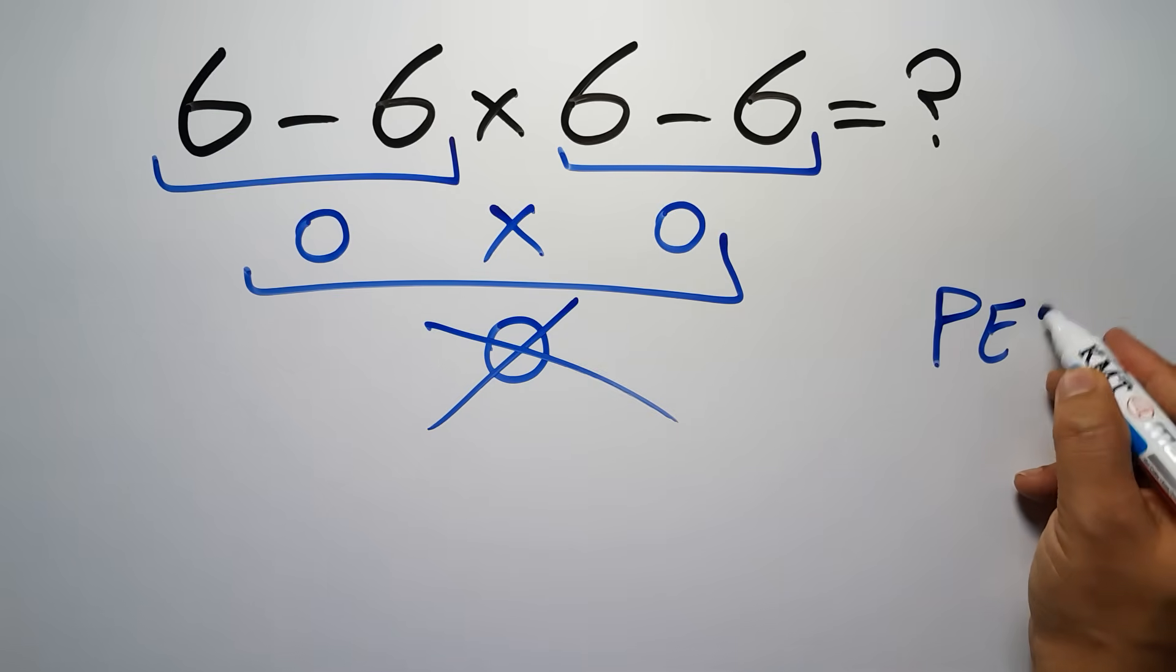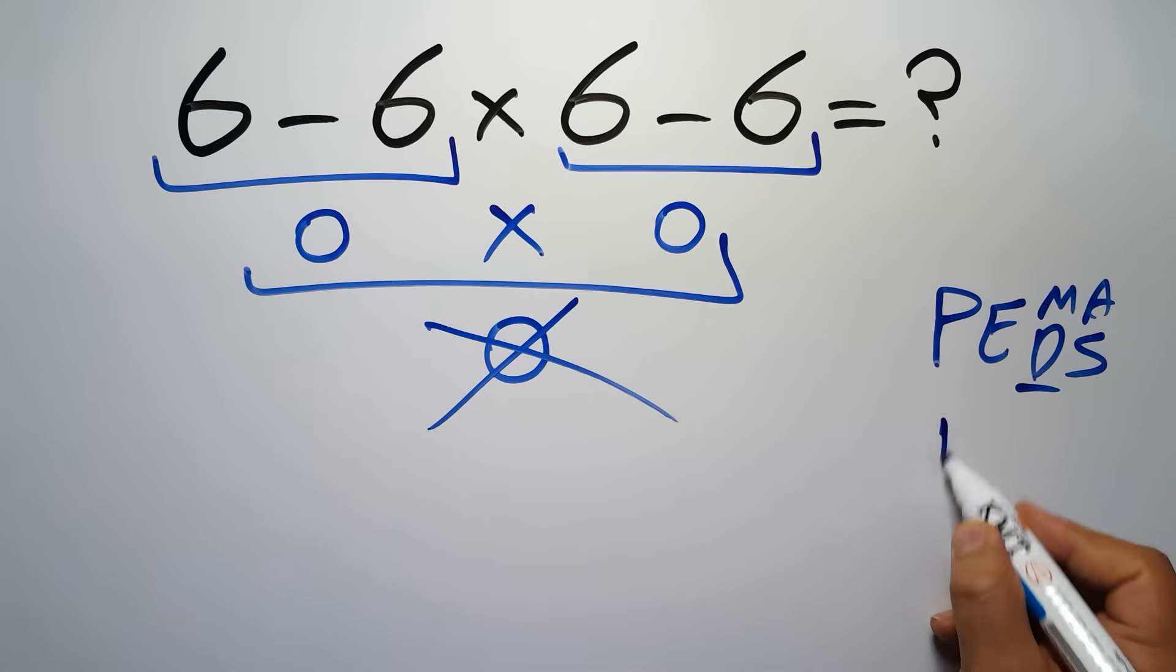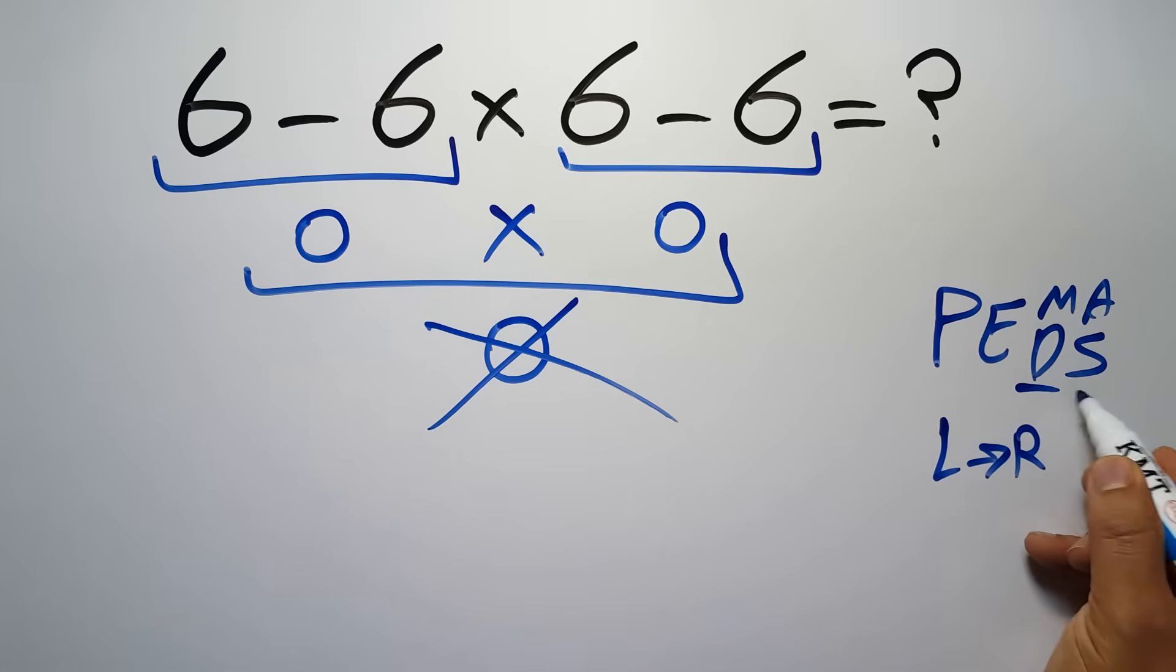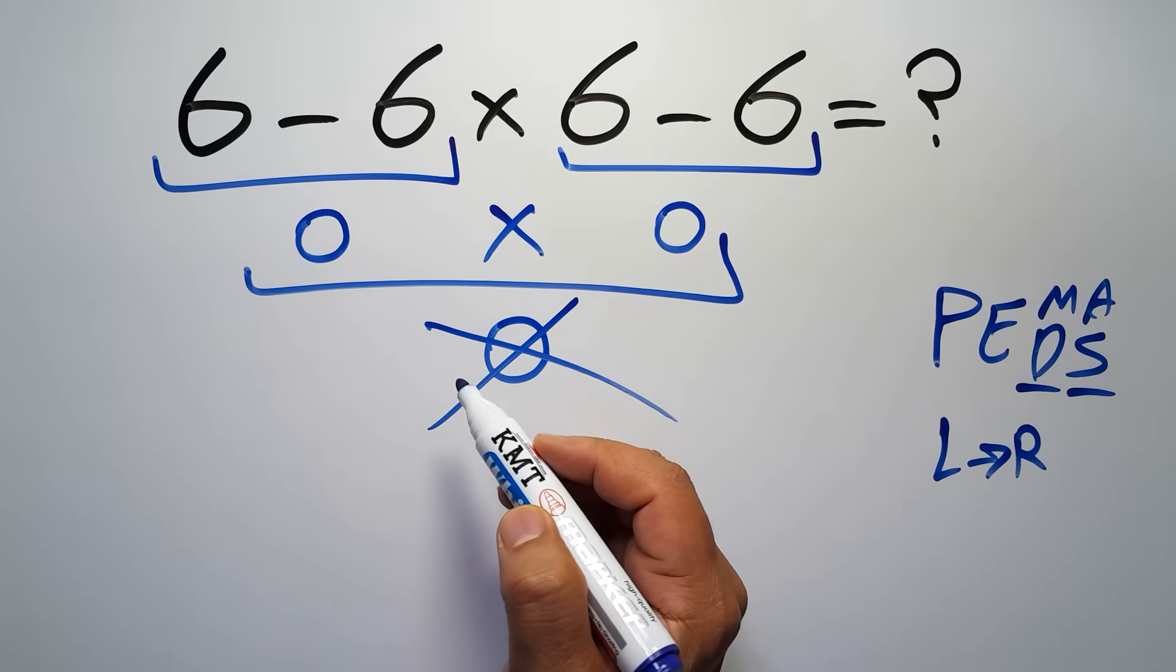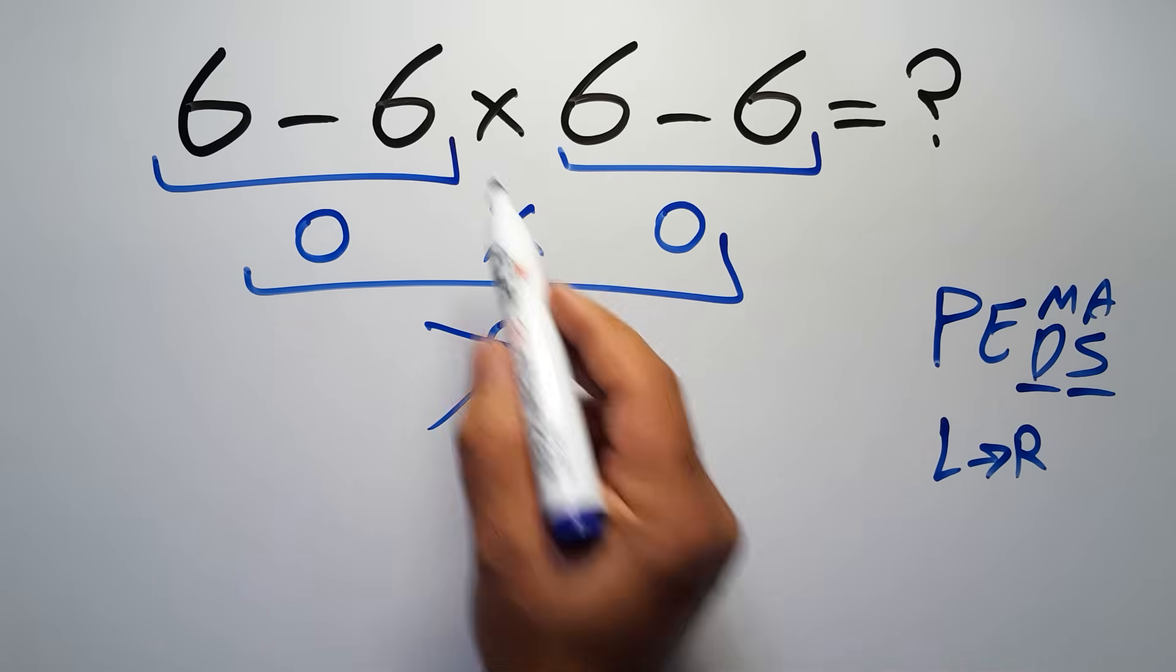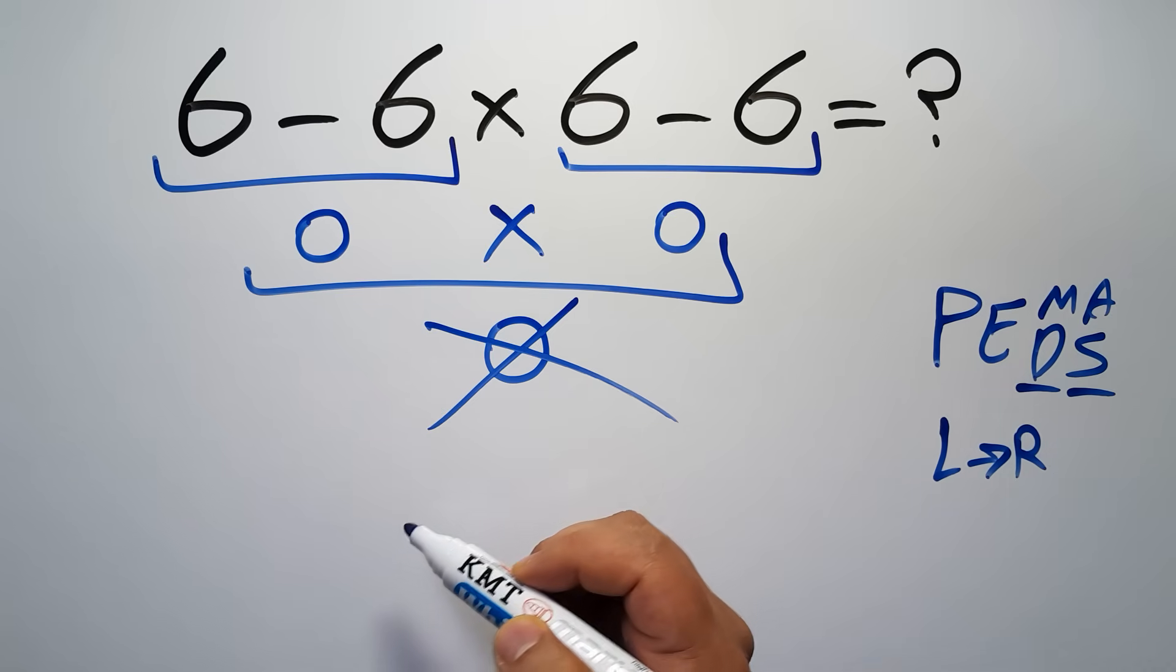Parentheses, then exponents, then multiplication or division, and finally addition or subtraction. Remember that multiplication and division have equal priority, and we have to work from left to right. The same applies to addition and subtraction. In this expression we have two subtractions and one multiplication. According to PEMDAS, multiplication has higher priority than subtraction because multiplication comes before subtraction.